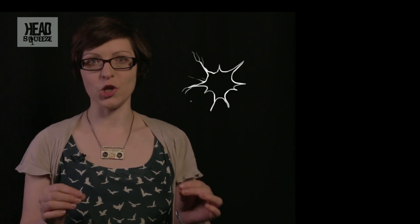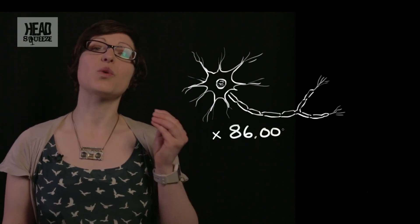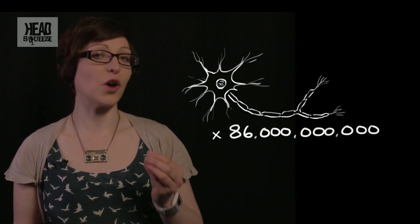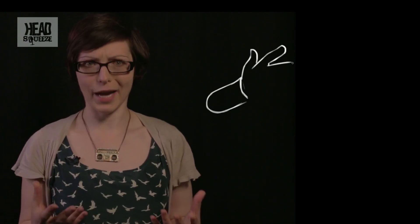But if you want to get the really huge numbers, you have to go down to a microscopic level. Inside your brain you have on average 86 billion neurons. If everyone on Earth right now was a brain cell, you would need 12 planets the size of Earth to equal the number of brain cells you have inside your head.